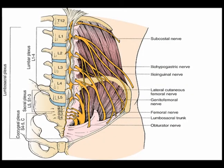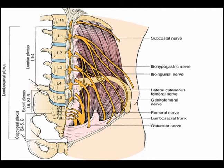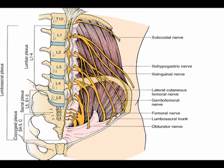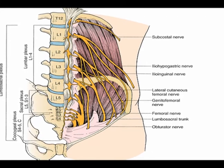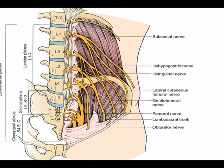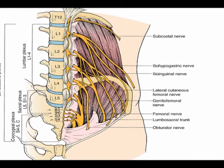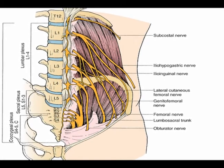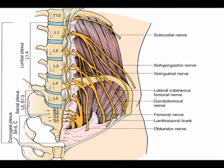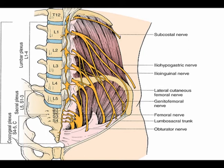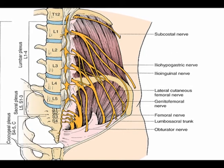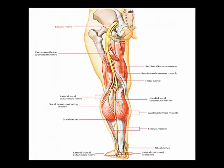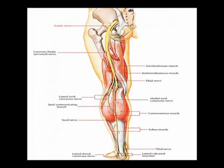The iliohypogastric nerve is created from spinal nerve roots T12 and L1. The ilioinguinal nerve derives from a branch of the L1 spinal nerve. The genitofemoral nerve arises from the superior aspects of L1 and L2. The lateral femoral cutaneous nerve comes from the L2 and L3 spinal nerves. The femoral nerve ranks as the largest nerve arising from the lumbar plexus; it is created from spinal nerve roots L2, L3, and L4. The obturator nerve arises from spinal nerve roots L2, L3, and L4. The sciatic nerve is derived from spinal nerve roots from the lumbar and sacral plexus.